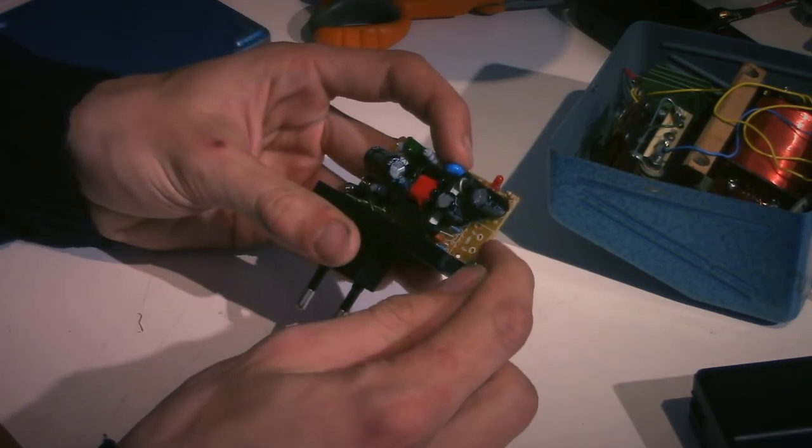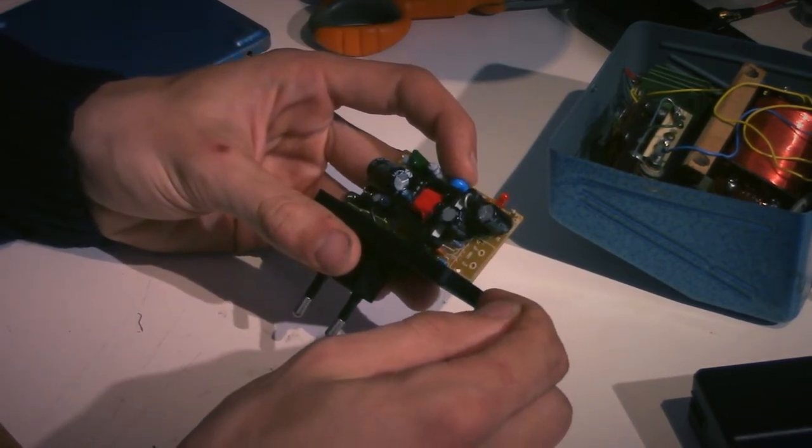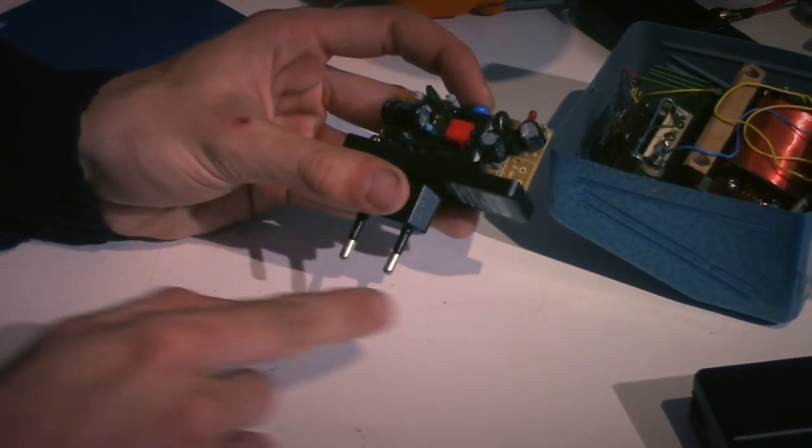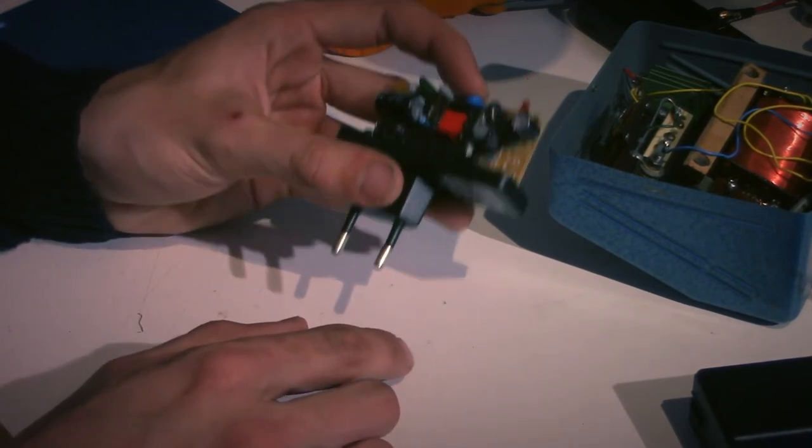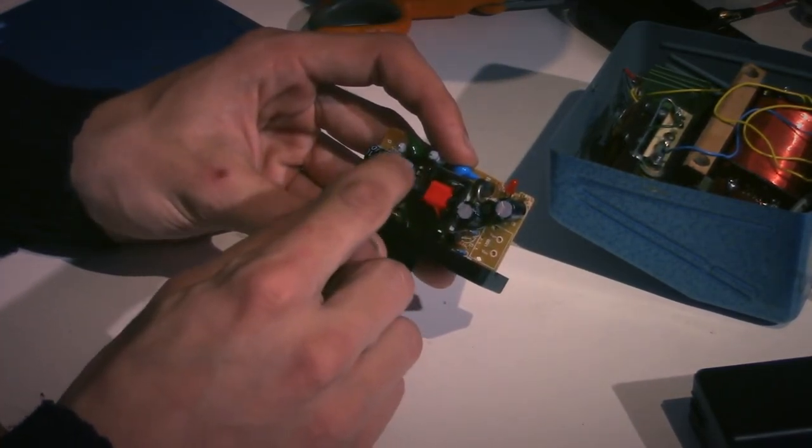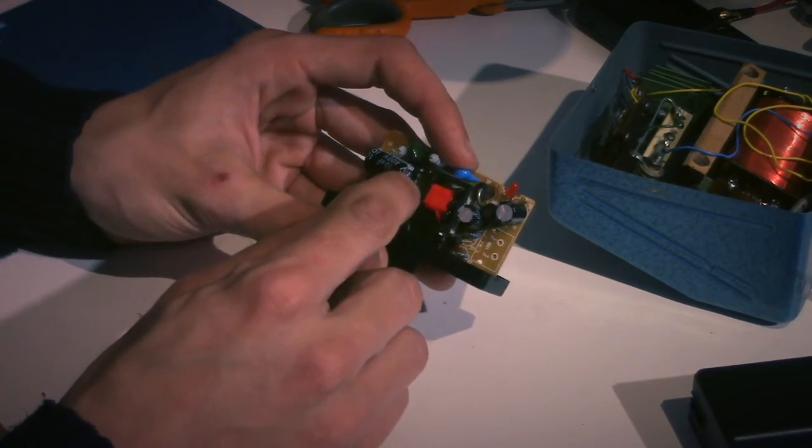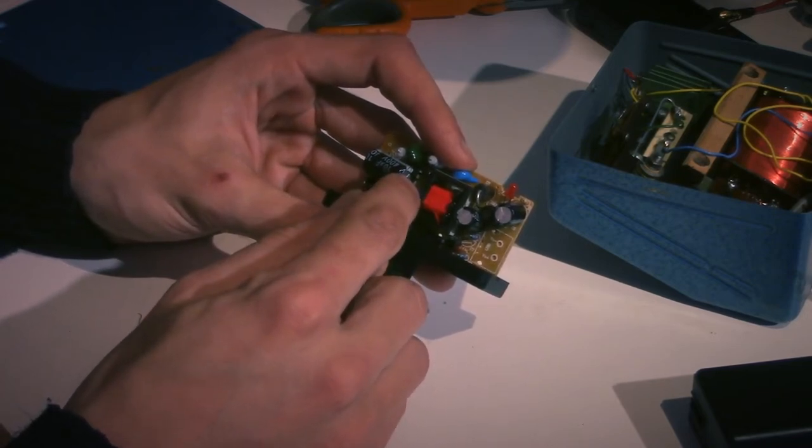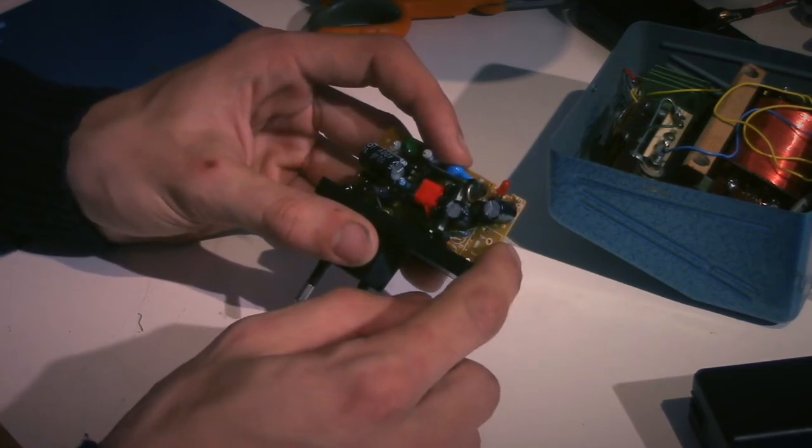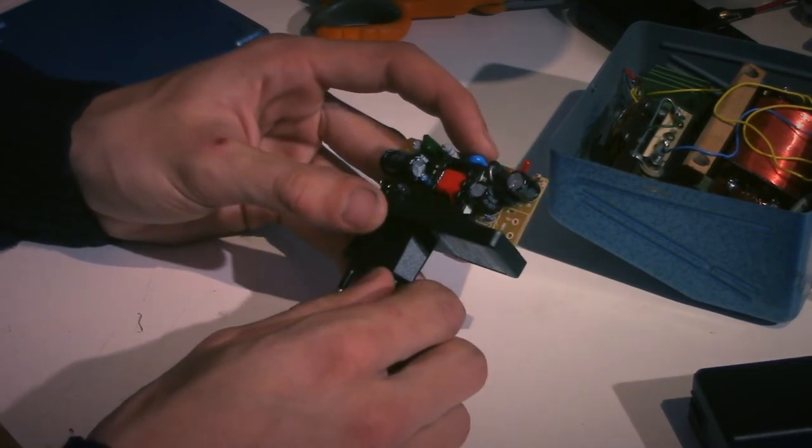So if the voltage at the output decreases for some reason, maybe we're drawing lots of current from it, or maybe the input voltage dropped a little bit for some reason, then we can simply compensate for that by increasing the duty cycle of the switching element. And we can get the voltage back up to where it should be. So we don't need that weird regulator at the end, which is nice.